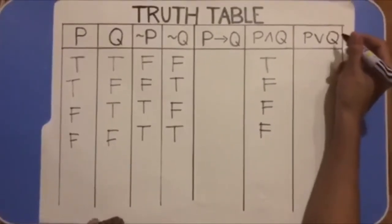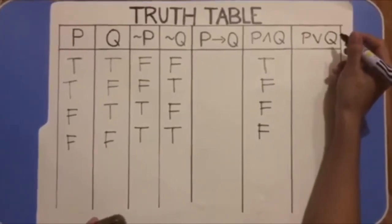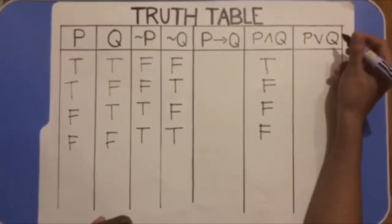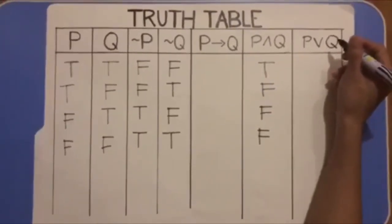In the seventh column, P or Q is true if either P is true or Q is true. It's only false if both P and Q are false.